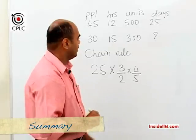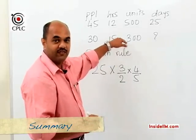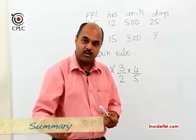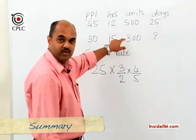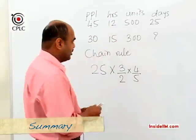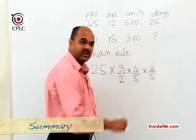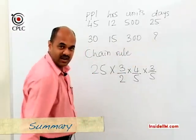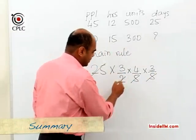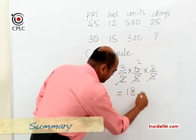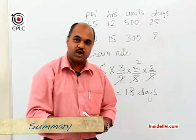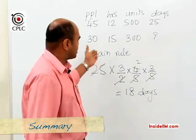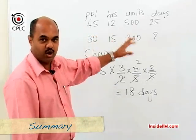The third parameter is the number of units of work: it changes from 500 to 300, which is 3/5 of earlier. Since fewer units of work means fewer days, this is a direct variation and the days also become 3/5 of earlier, so we multiply by 3/5. Solving the full expression — 25 × (3/2) × (4/5) × (3/5) — gives us 18 days. This is how we solve such a problem using the concepts of ratios and variation with the chain rule.